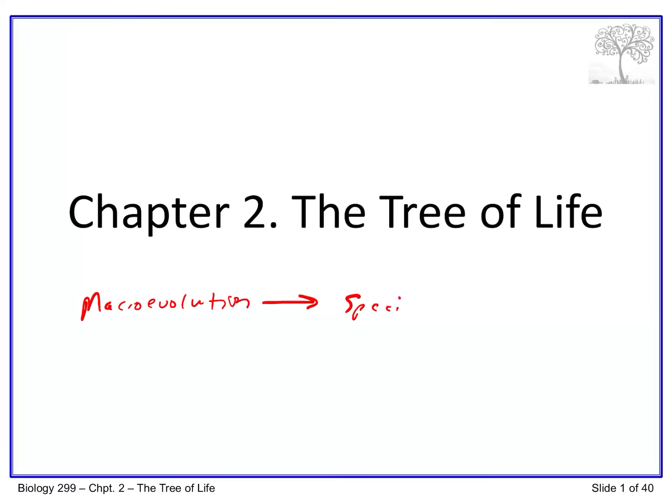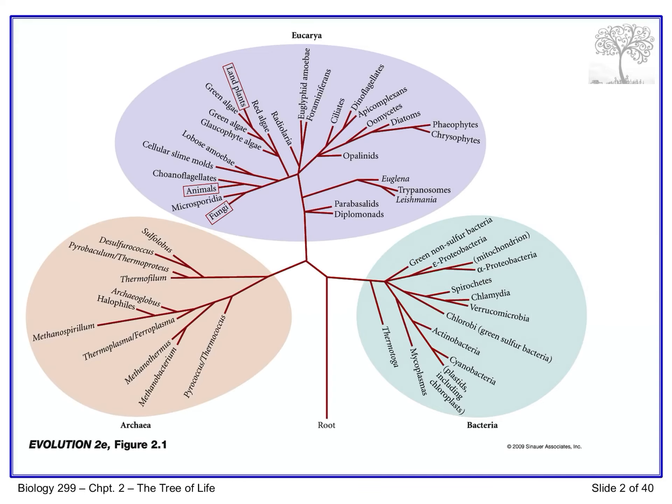Macroevolution proceeds by the process of speciation — basically the splitting of one ancestral species into multiple descendant species through time. The more time between the ancestral and descendant species, the more differences we typically see between them, because it takes time for differences to evolve. So the more time we have, the more differences can accumulate.